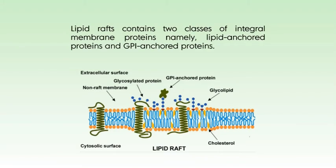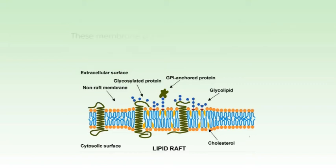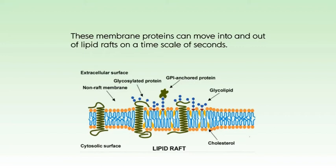These lipid rafts contain two classes of integral membrane proteins: lipid-anchored proteins and GPI-anchored proteins. These membrane proteins can move into and out of the lipid rafts on a time scale of seconds. Because most cells express more than 50 different kinds of plasma membrane proteins, it is likely that a single raft contains only a subset of membrane proteins and that this segregation of membrane proteins is functionally significant. Certain membrane receptors and signaling proteins appear to be segregated together in membrane rafts.